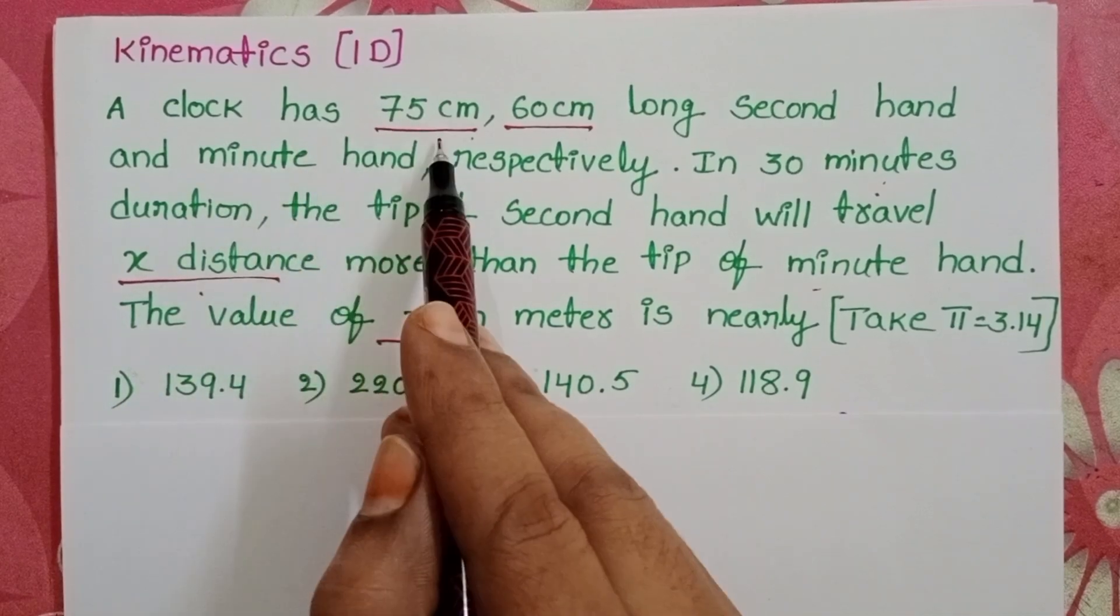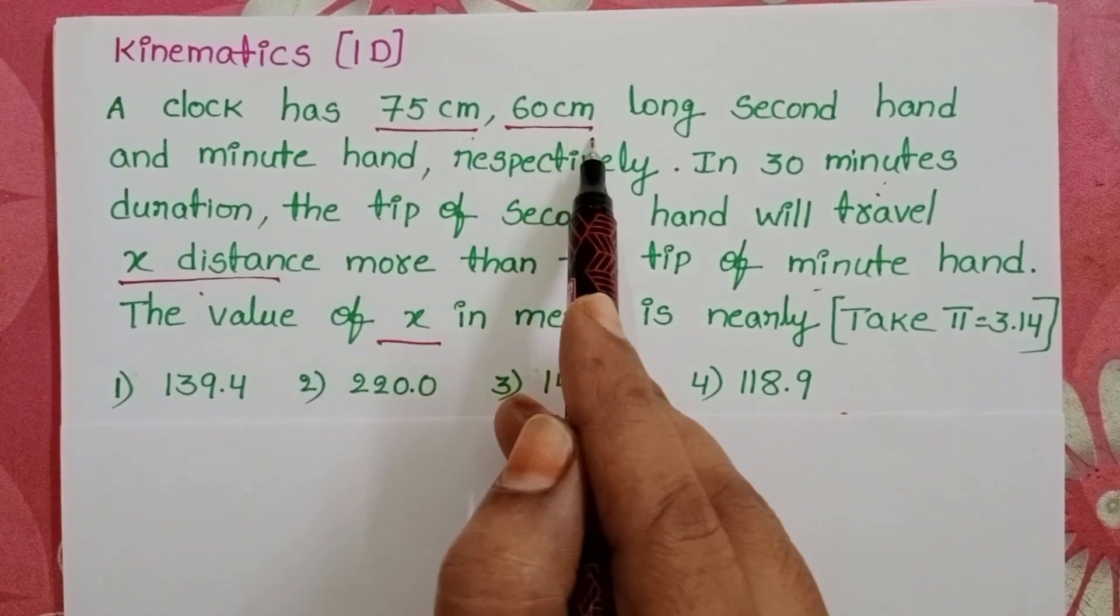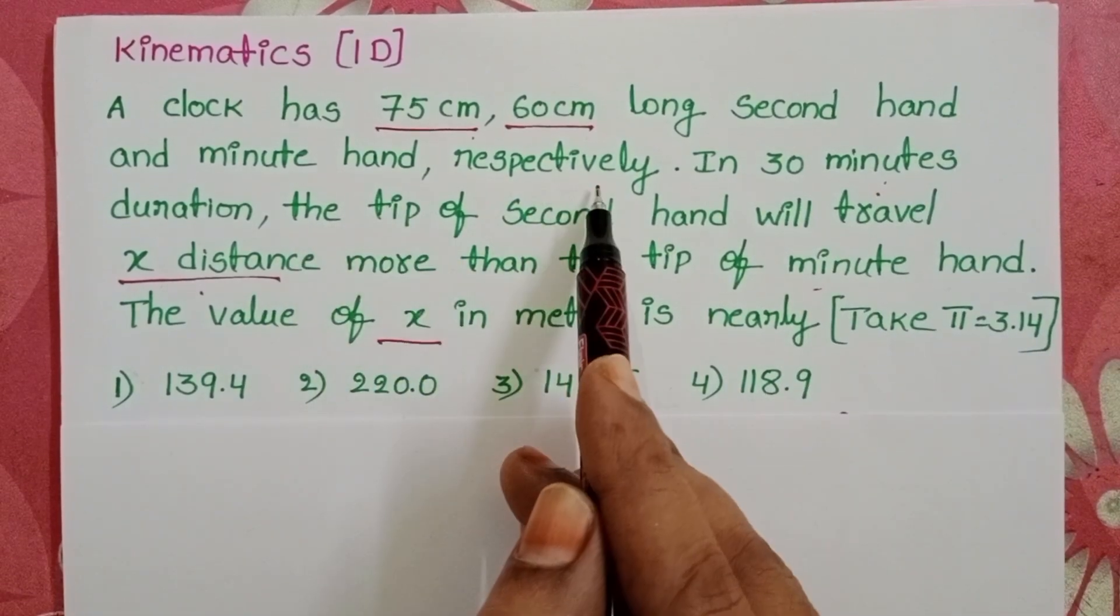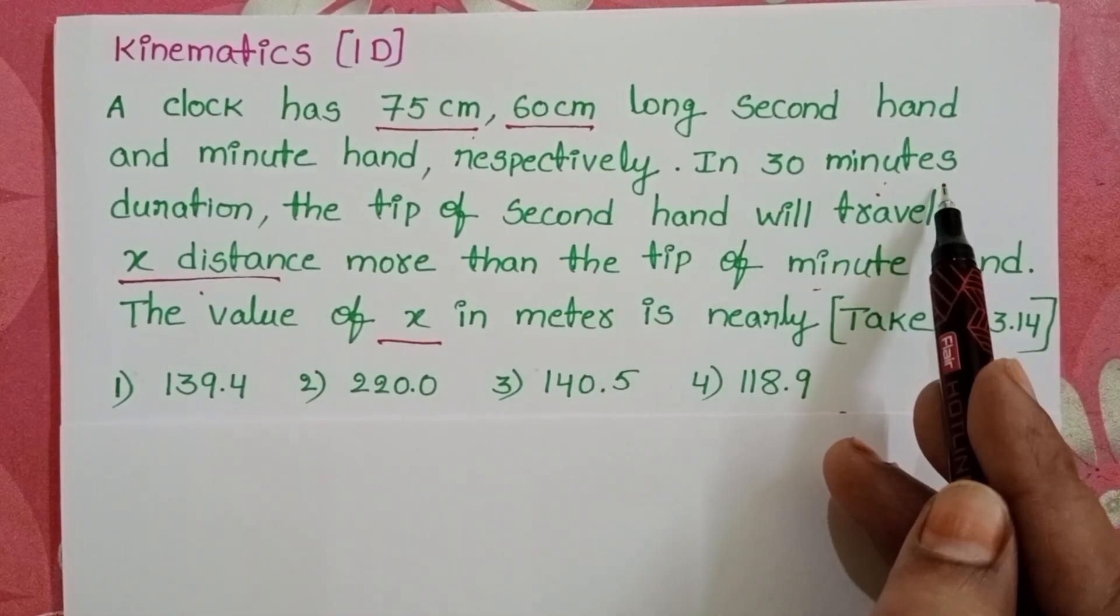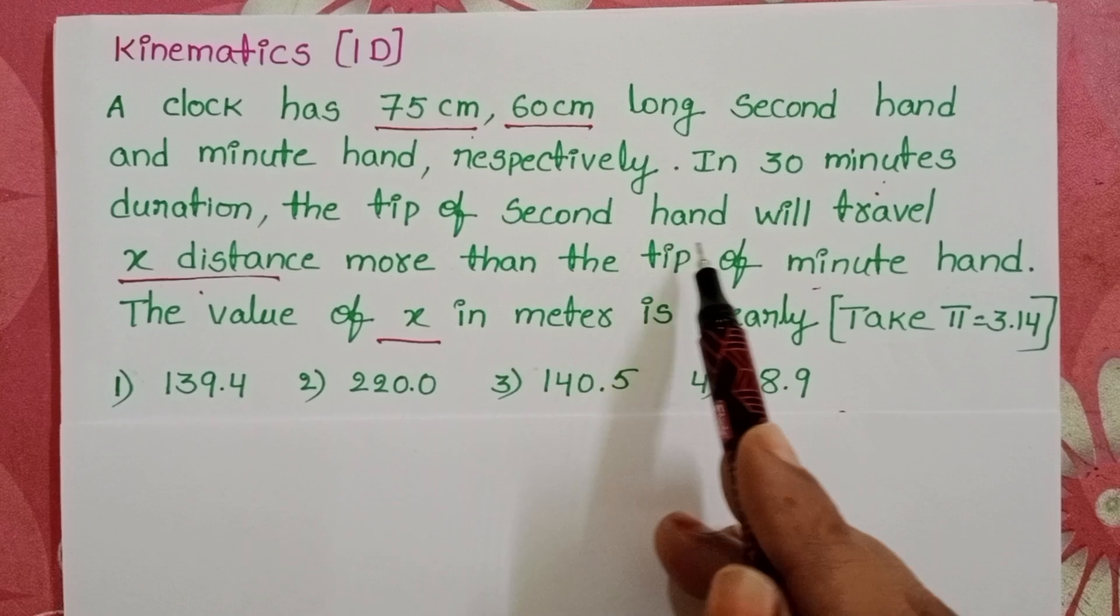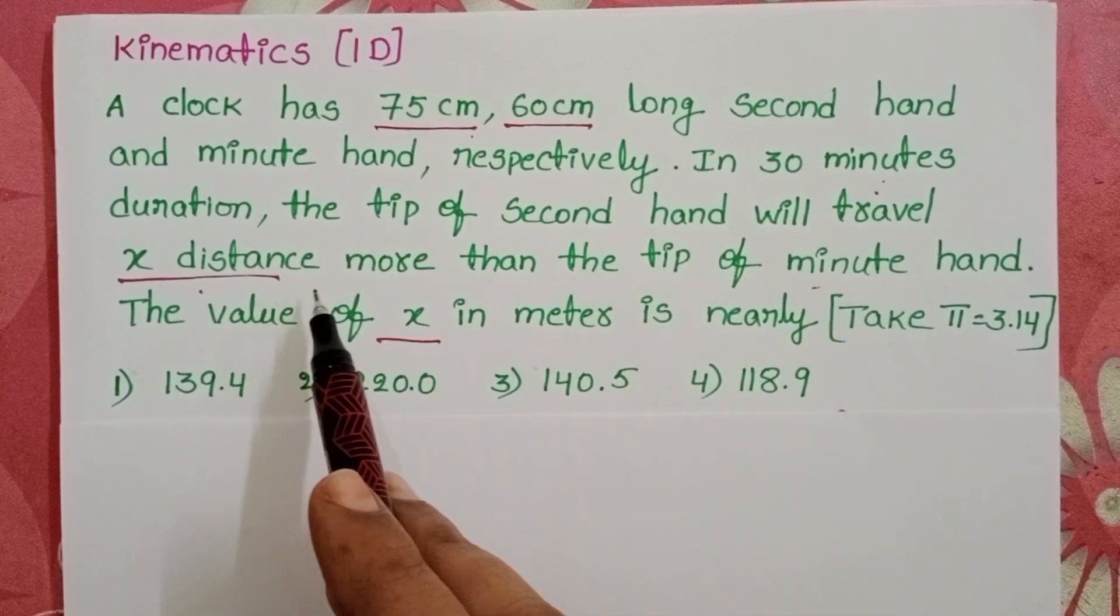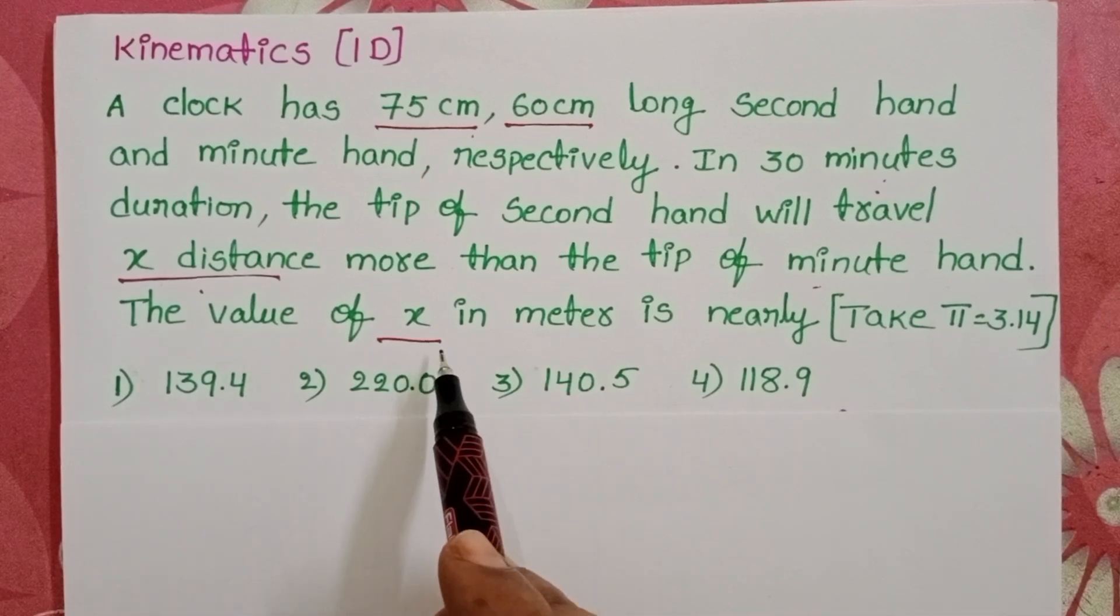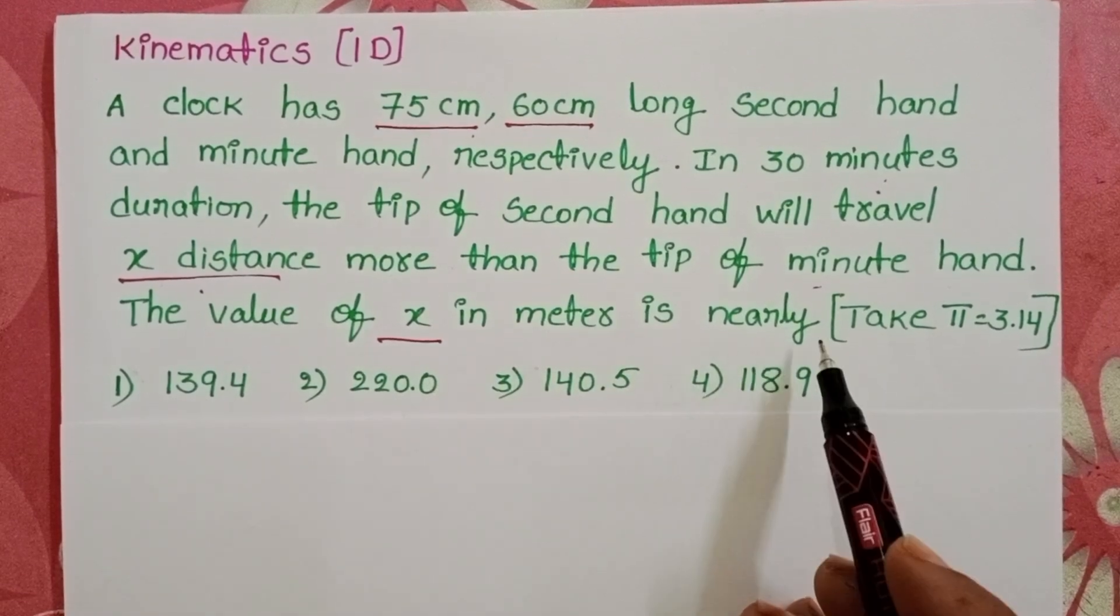A clock has 75 cm, 60 cm long second hand and minute hand respectively. In 30 minutes duration, the tip of the second hand will travel x distance more than the tip of the minute hand. The value of x in meters is nearly.